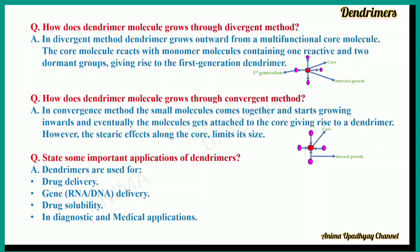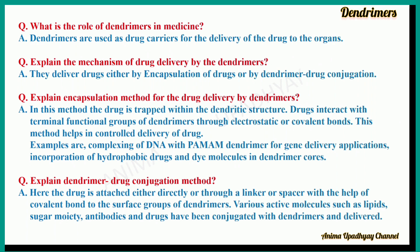Dendrimers are used for drug delivery, gene delivery (that is RNA and DNA), drug solubility, and in diagnostic and medical applications. What is the role of dendrimers in medicine? They are used as drug carriers for the delivery of drugs to the organs. Explain the mechanism of drug delivery by dendrimers. They deliver drugs either by encapsulation of drugs or by the dendrimer-drug conjugation method.